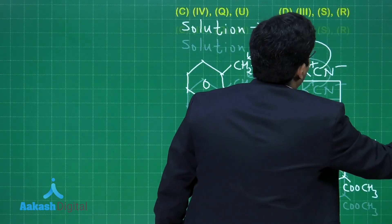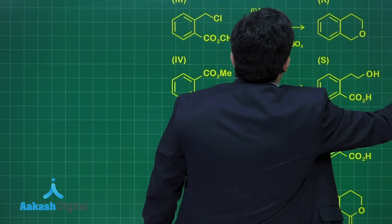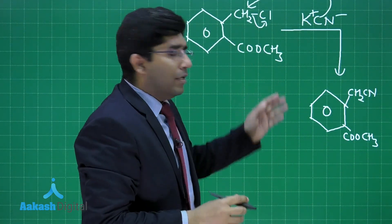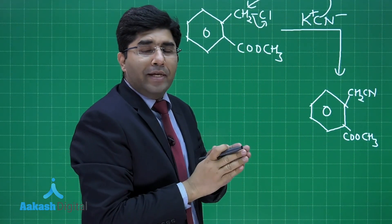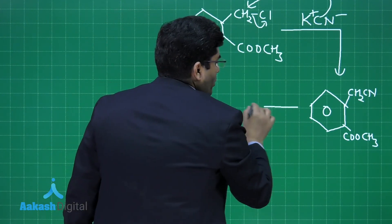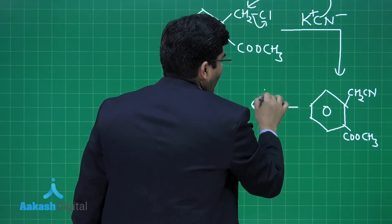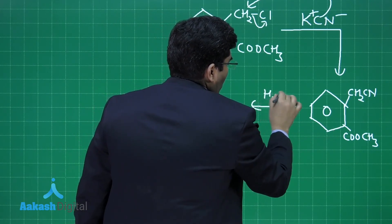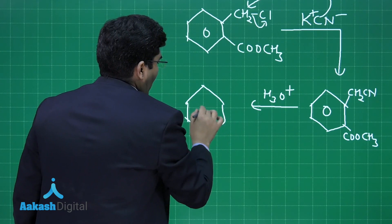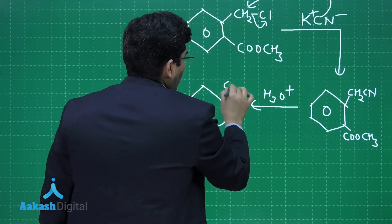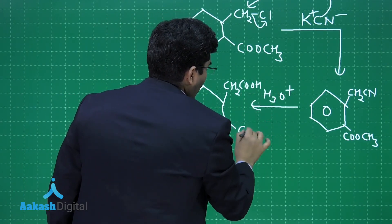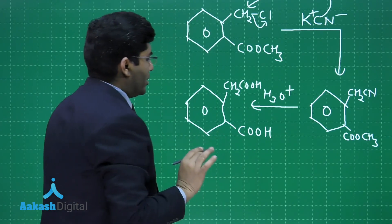In the next step, he is hydrolyzing it. Cyanide, whether hydrolyzing in acidic medium or basic medium, will convert into carboxylic acid. The hydrolysis of ester will take place and we will get the product having two carboxylic acids: CH2COOH and COOH. This is the product.